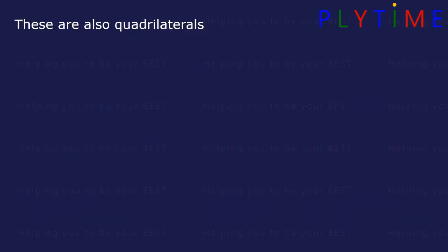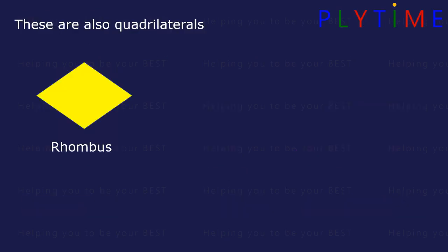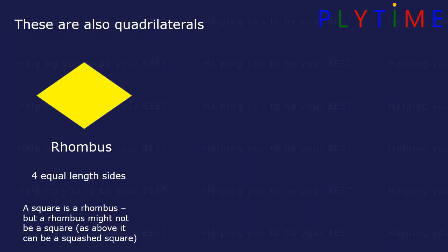There are also other quadrilaterals. A rhombus has four equal length sides. A square is a rhombus, but a rhombus might not be a square — like this, it might be a squashed square.